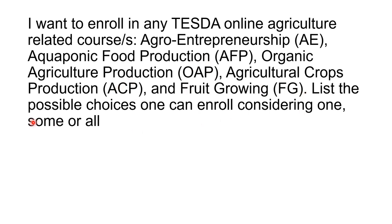Looking at the number of courses: one, two, three, four, five — so there are five courses. When we say 'some,' that could mean two, three, or four, because 'all' would mean everything. Some of you were able to do the 'all' correctly.